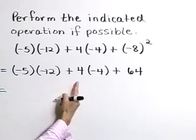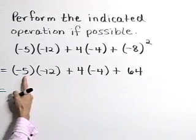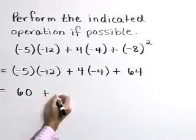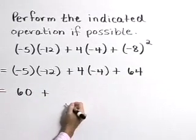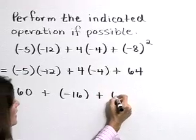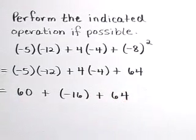Let's perform the multiplication next. Negative 5 times negative 12 is positive 60. 4 times negative 4 is a negative 16. And lastly, let's not forget that plus 64.